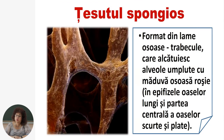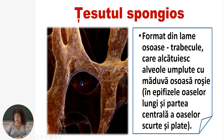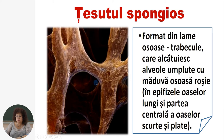Care este structura țesutului spongios? El este format din lame osoase numite trabecule, pe care le vedem în imagine. Aceste lame osoase delimitează niște cavități numite alveole, care sunt umplute cu măduvă osoasă roșie, care are rolul de organ hematopoietic. Țesutul spongios este situat în epifizele oaselor lungi și partea centrală a oaselor scurte și plate.